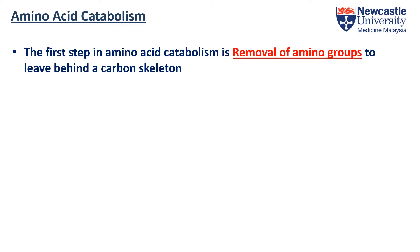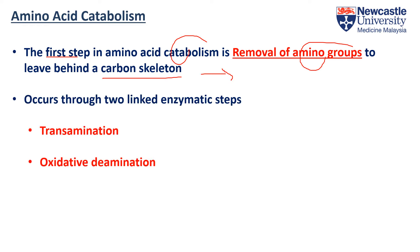The first step in amino acid breakdown is to remove the amino group so that we can leave behind a carbon skeleton that can go into the energy production pathway. To do that, we will need two enzymes to catalyse these two processes, which are transamination and oxidative deamination.